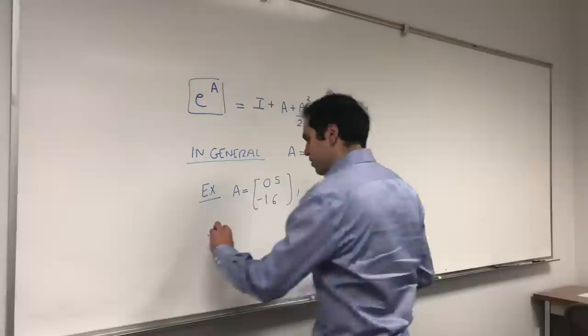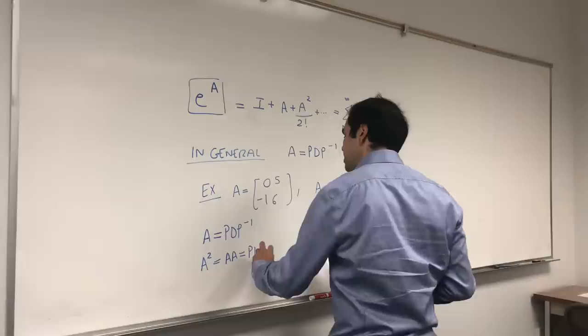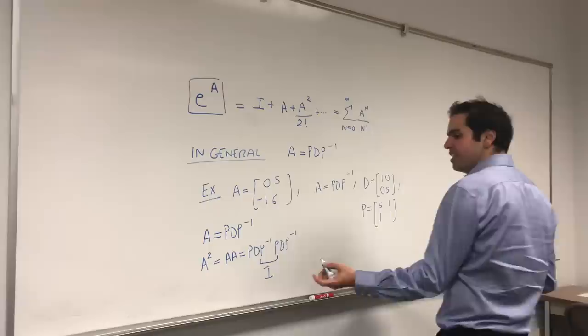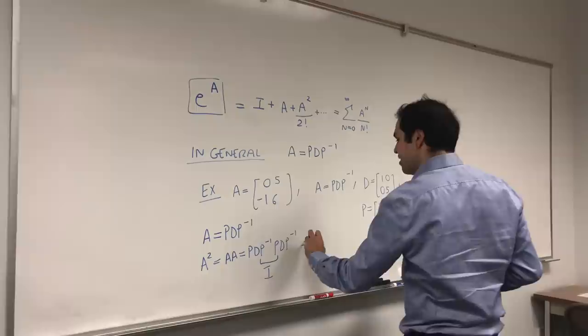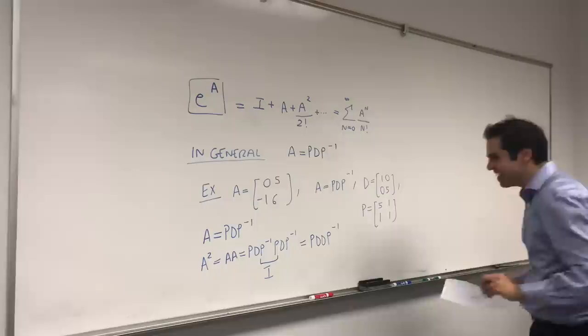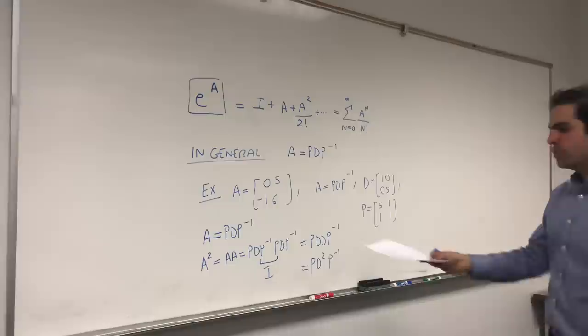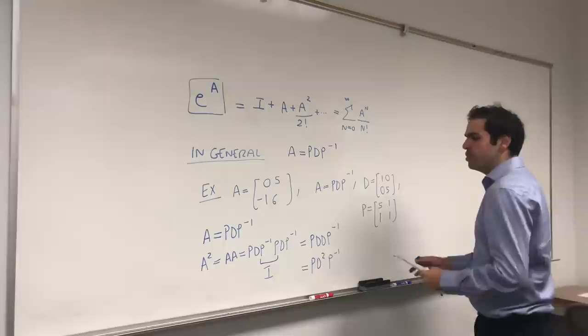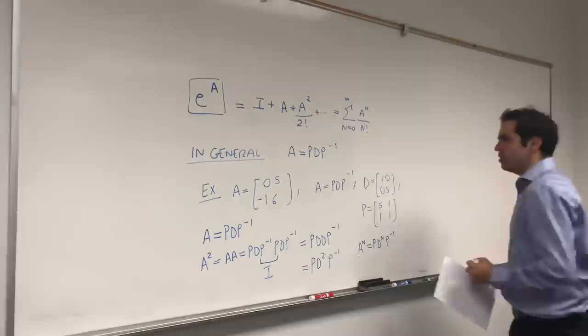Now, well, we know that A equals to PDP inverse. Well, then, A squared, that's AA, and that's PDP inverse, PDP inverse. But notice how nice this is. We get P inverse, P is the identity, and the identity in multiplication doesn't do anything, so we literally get PDDP inverse, like PDD, but PDD, okay. And we get PD squared, P inverse. So you see, A is PDP inverse, A squared is PD squared P inverse, and in general, what you get is A to the N is PD to the N, P inverse.